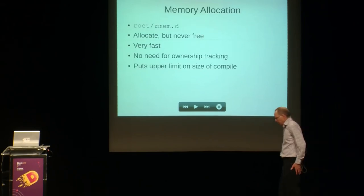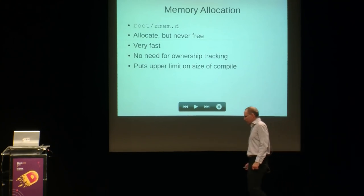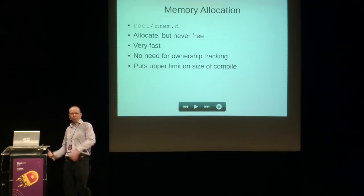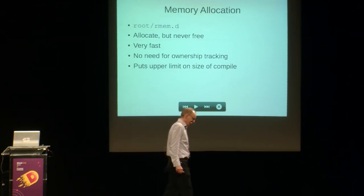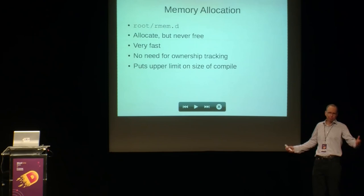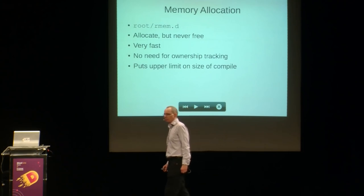The first thing to understand about how the compiler works is how it does memory allocation. Because it's a batch program, you don't really care about recycling memory — it just allocates memory and never frees it. This might be heresy, but it's actually a form of garbage collection except you never collect the garbage. The advantage is it's very, very fast, and it leaks memory like crazy — but it doesn't matter, because when you're done compiling the whole process is thrown away. Part of the speed advantage is you don't need to do ownership tracking.